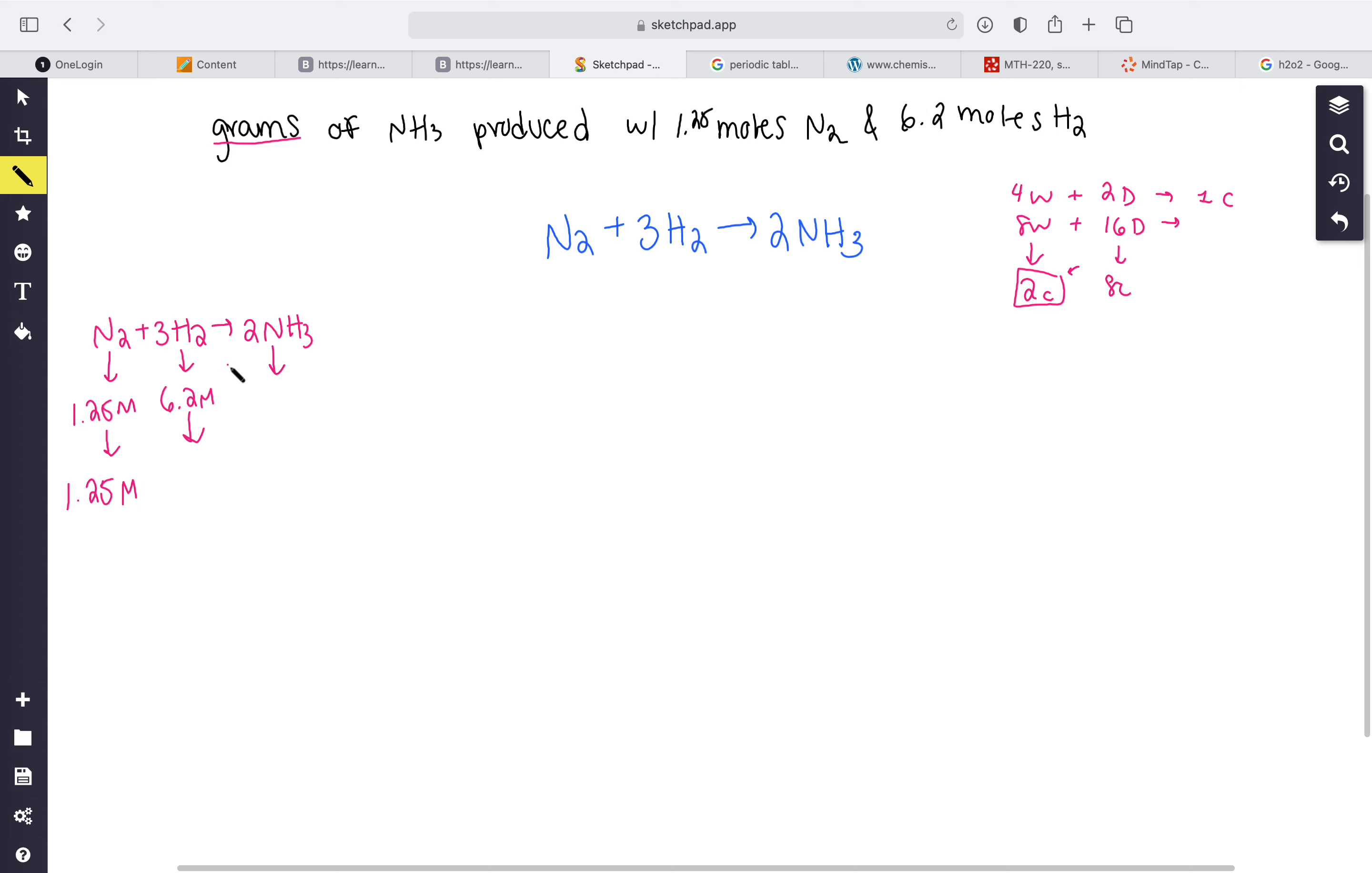Then 6.2 divided by 3 is gonna be about 2.06 repeating. So we know that the limiting reagent is going to be this.